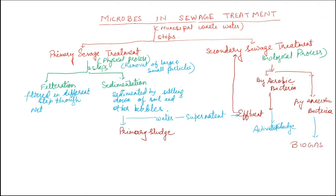The physical process includes filtration and sedimentation, in which large and small particles are removed. Filtration occurs by the help of a mesh made of different size nets in different steps. After filtration, the water is sent to a sedimentation tank where grit settles at the bottom. The settled water rises as effluent, and the sediment that settles down is known as primary sludge.